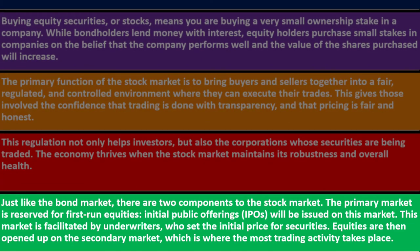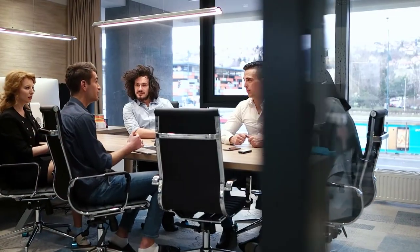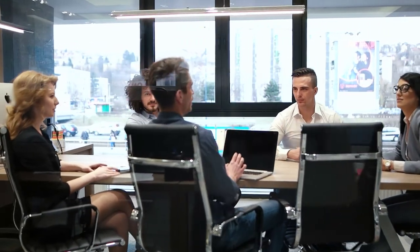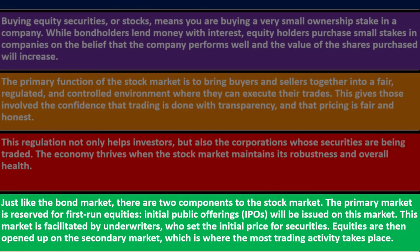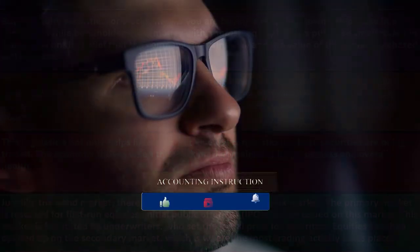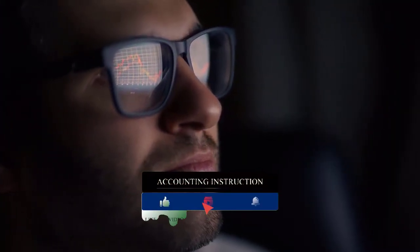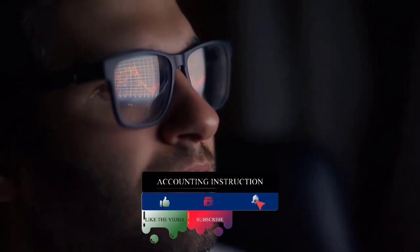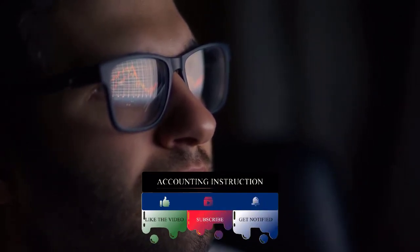Like the bond market, the stock market has two components. The primary market is reserved for first-run equities — initial public offerings (IPOs) are issued here, meaning you're buying directly from the company as it issues new stocks. Most of the time, individual investors are not buying IPOs but rather buying on the secondary market from other investors who are reselling stock. This secondary market is facilitated by underwriters who set the initial price for securities, and it is where most trading activity happens.